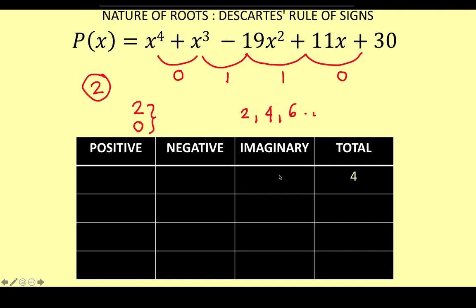Also take note that imaginary roots always come in pairs — so we can have 2, 4, or 6 imaginary roots, but not 1, 3, 5, or 7. The number of imaginary roots must always be even. So we can expect either 2 positive real roots or 0 positive real roots, but the total is always four.